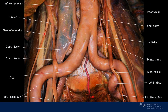This is an anterior view, right side and left side. We identify the abdominal aorta with a couple of its branches: its bifurcation as the common iliac arteries on the right and left sides, and a medial sacral artery coming out of the abdominal aorta. The common iliac arteries give rise to the external and internal iliac arteries. On the right side, we see the inferior vena cava, with external and internal iliac veins draining into it.